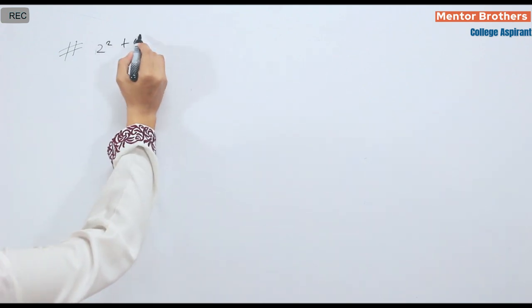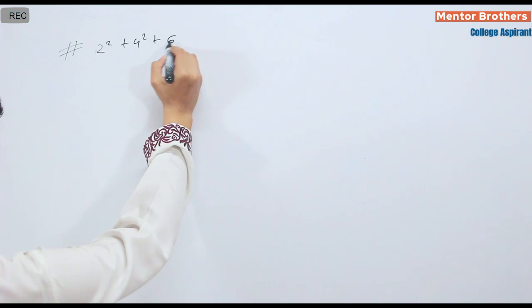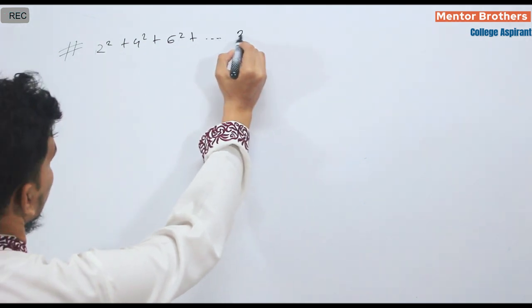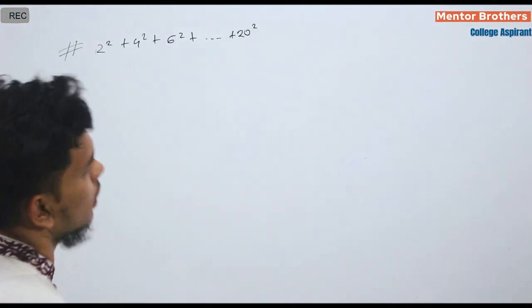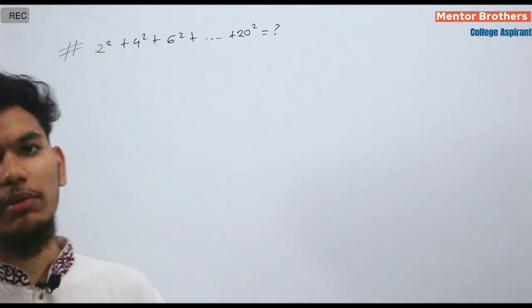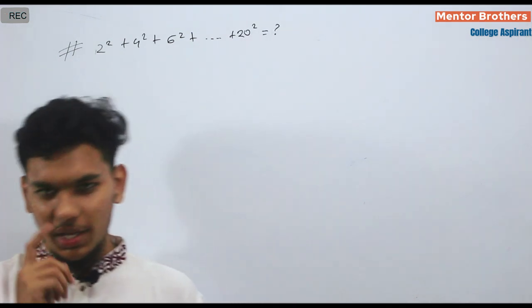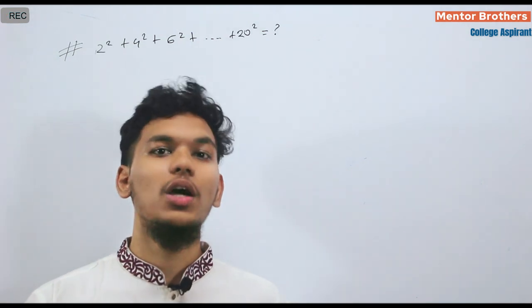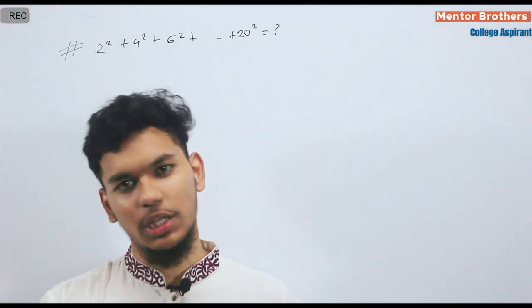Let's take a look at this: 2 square plus 4 square plus 6 square plus 20 square. I will tell you that you will manually calculate the 2 square, 4 square, 6 square. Now, you can learn that.